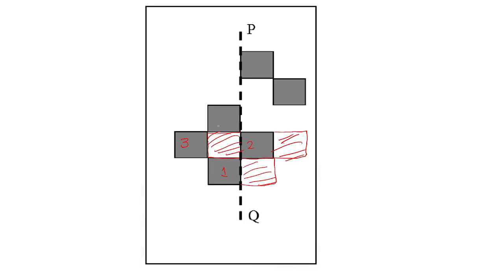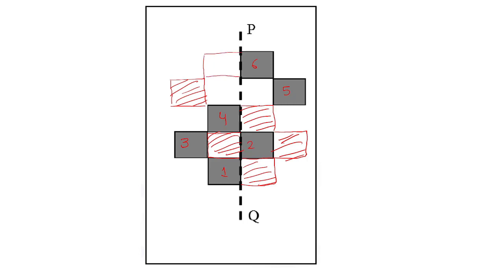Block number four is also on the left-hand side of the line of symmetry PQ, so corresponding to this we have to make one more block here to make it symmetric. Block number five is on the right-hand side, so corresponding to it we must make one more block at the left-hand side. Block number six is also on the right-hand side, so we will make one more block at the left-hand side.